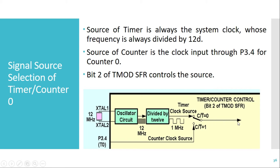If the C/T̄ bit is 1, the switch connects to pin P3.4. Whenever a clock signal is given on this pin, that clock signal is provided as input to the timer, and the timer increments based on the clock available on this pin. This is called counter mode. This clock source selection decides whether we operate the timer as a timer or as a counter.